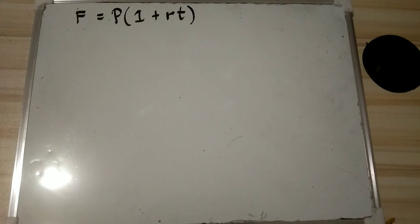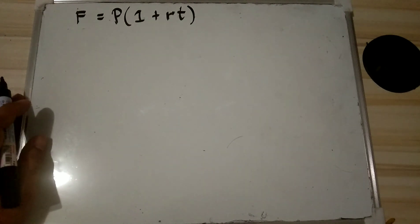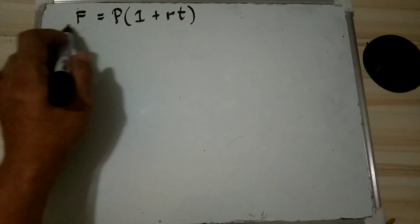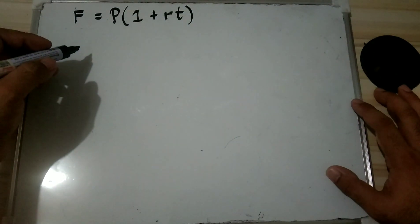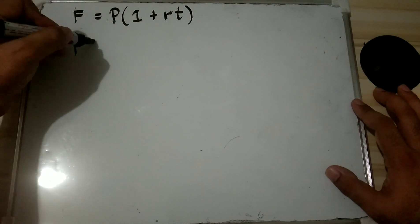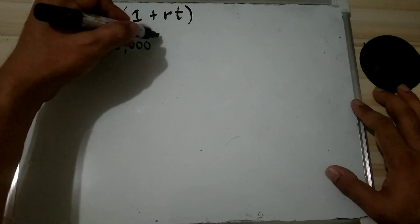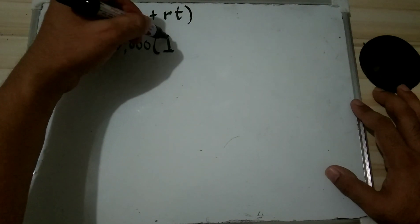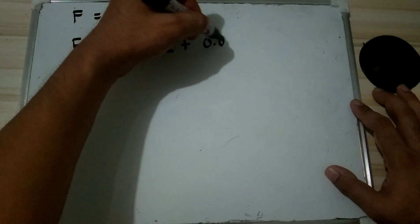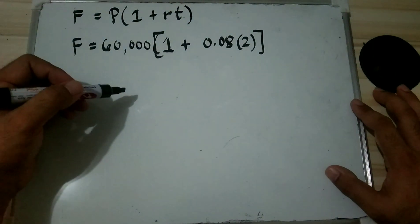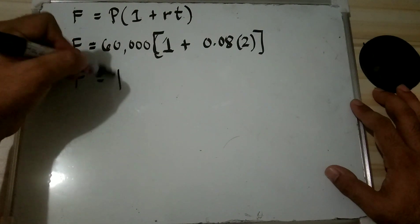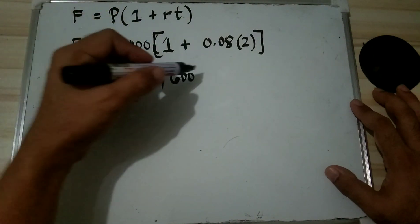Alternative solution using the other formula: since the problem asks for the final amount, F = P(1 + rt) = 60,000 × (1 + 0.08 × 2), which also gives 69,600 pesos.